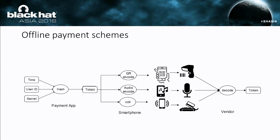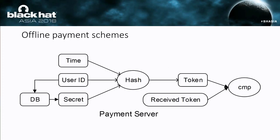The channels can be something like QR code, audio channel, or a POS machine channel. The smartphone will transmit the token via the channel, and the token will be received by the vendor through the channel. The vendor will decode the token from the received signal, and then pass the token to the back-end server for verification.